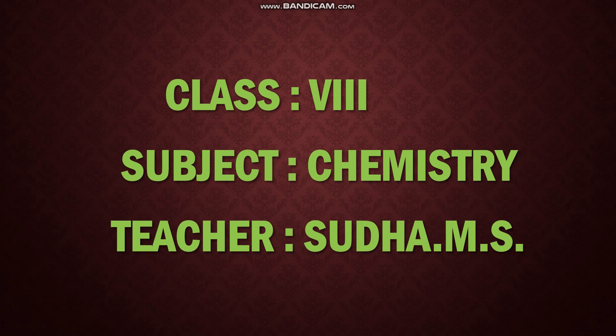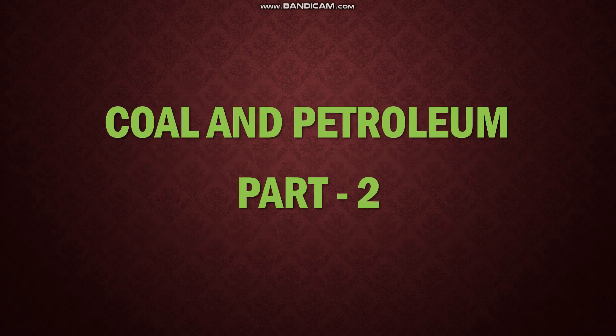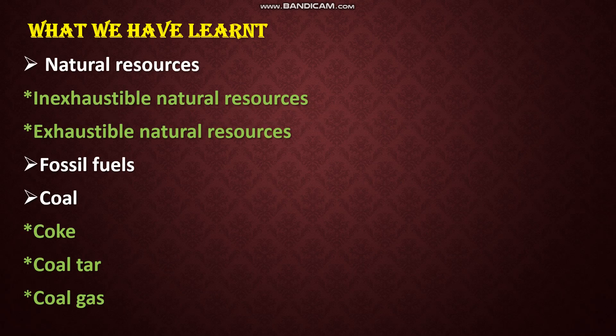Good morning students. Welcome back to chemistry class. Today let us continue the lesson coal and petroleum. Let us see what we have learned in the previous class. We have learned what are natural resources. The resources which we obtain from nature are called natural resources. It is classified into two types: inexhaustible natural resources and exhaustible natural resources.